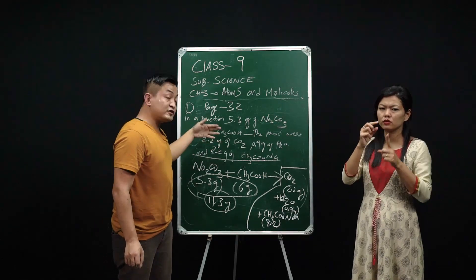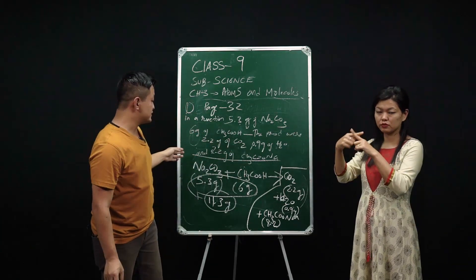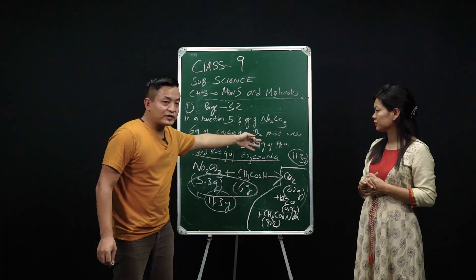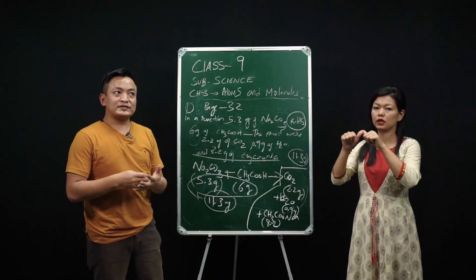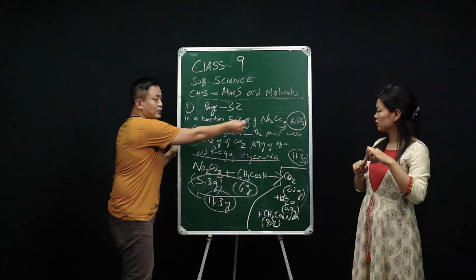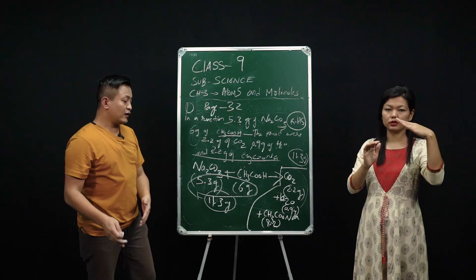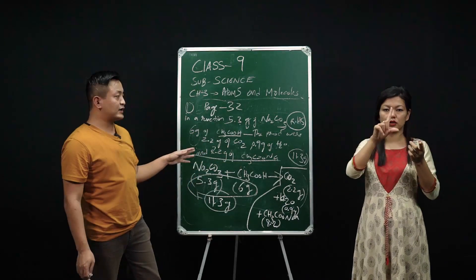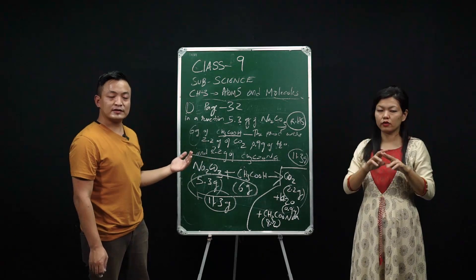On the right-hand side, take the sum of 2.2, 0.9, and 8.2 — you will get 11.3. In questions, 'product' always means the right-hand side, and what reacts means the left-hand side. Since both left-hand side and right-hand side equal 11.3 grams, this reaction obeys the Law of Conservation of Mass. Now we'll see the second law of chemical combination.